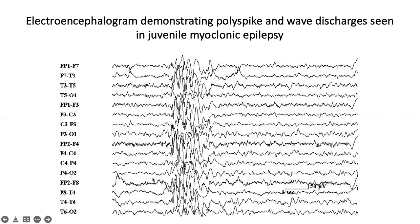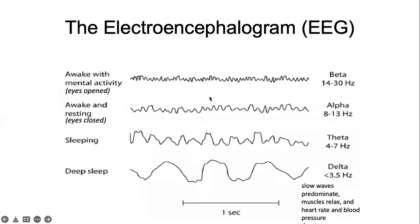This is an example of an EEG with demonstrable poly-spike and wave discharges seen in juvenile myoclonic epilepsy. Part of the waves is normal, but you will see abrupt spikes in the EEG — that's abnormal — and this is the part where you have your myoclonic jerks.